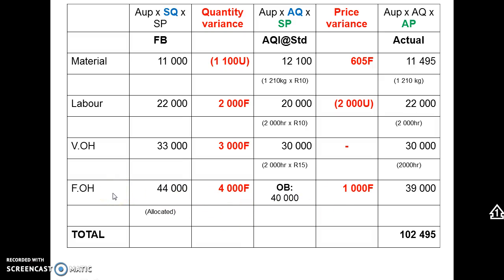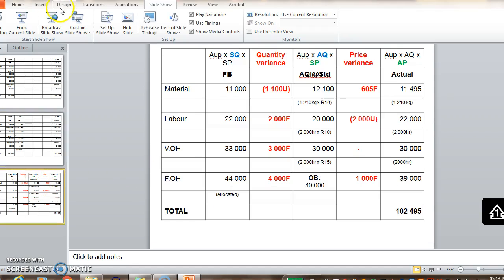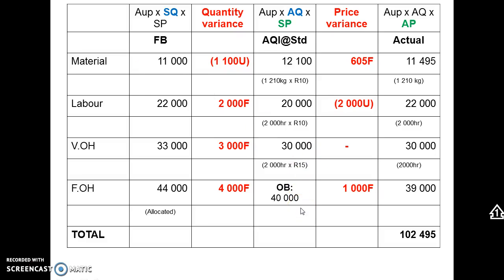The steps are the same as before: we flex the original budget and write the actuals on the right-hand side. But in the middle, instead of doing actual quantity of input at standard, we write the original budget. This is just a shortcut to get to the variances quicker — you can memorize the formulas if you want. But if you write the original budget in the middle, you'll see the volume variance pops up on the left-hand side and the spending variance on the right-hand side.